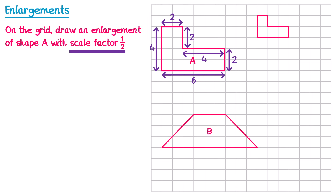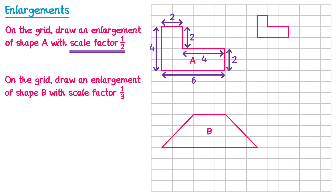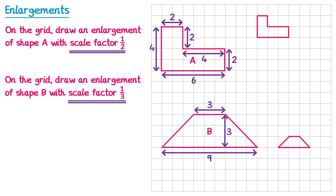Let's try one more: trapezium shape B with scale factor one third. The base is 9 squares and since the scale factor is one third we do a third of 9, which is 9 divided by 3, giving 3. So the base will be 3 squares long. The length on the top is 3 squares and the height is also 3 squares, and one third of 3 is 1. So we draw a length of 1 on the top at a height of 1, and the trapezium will look like this.